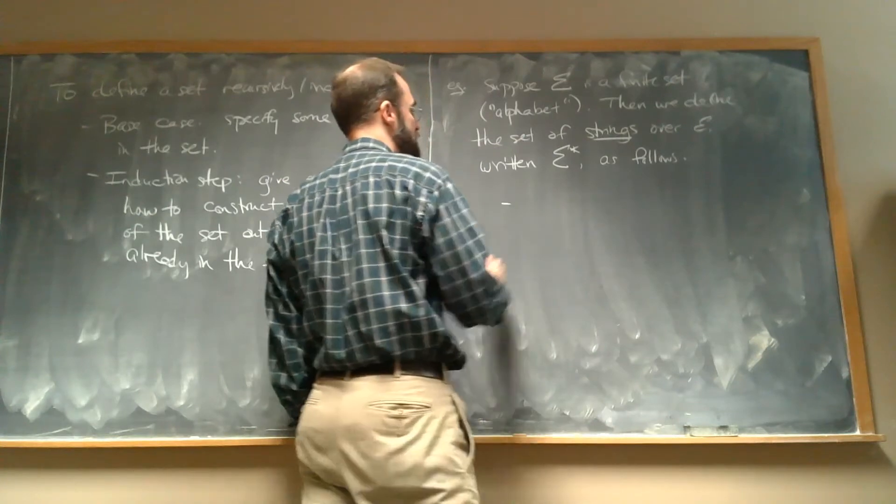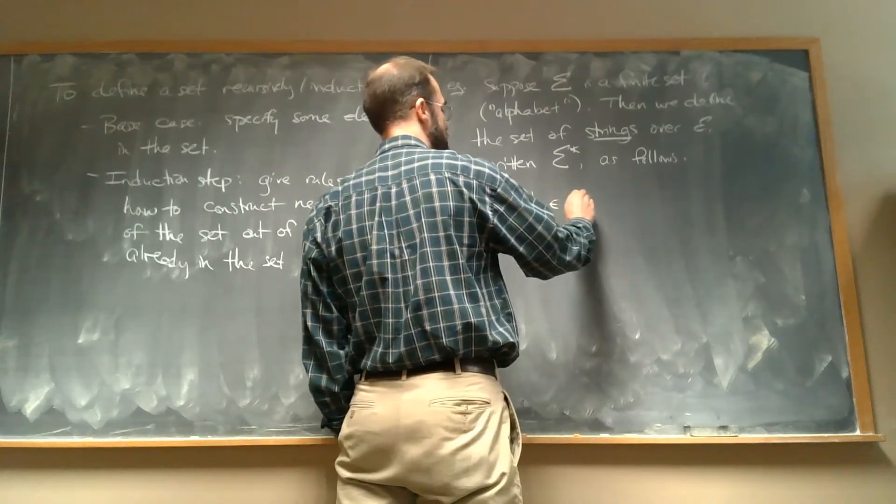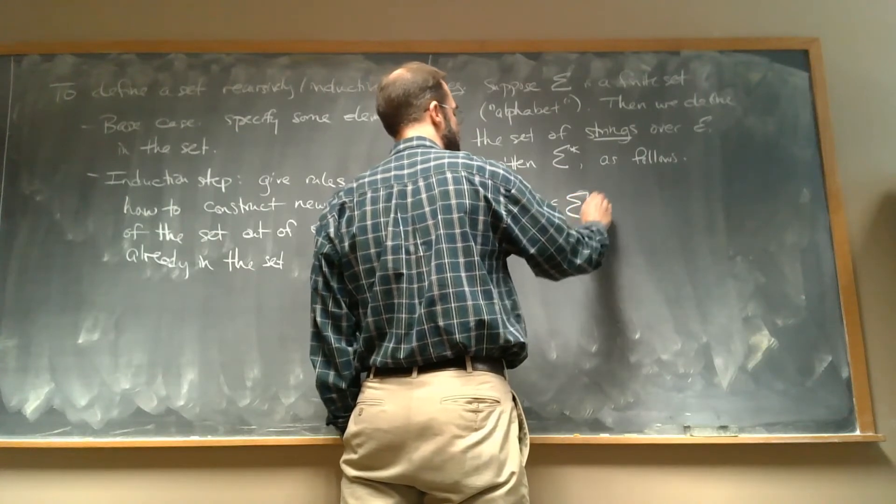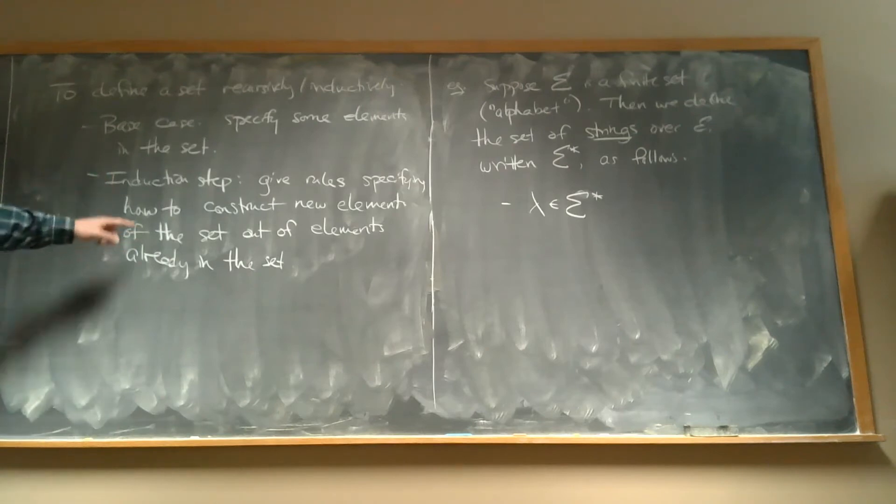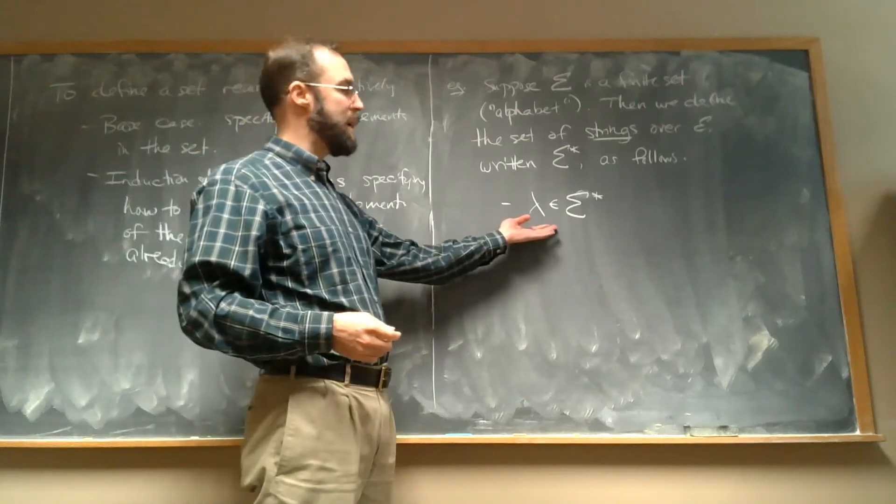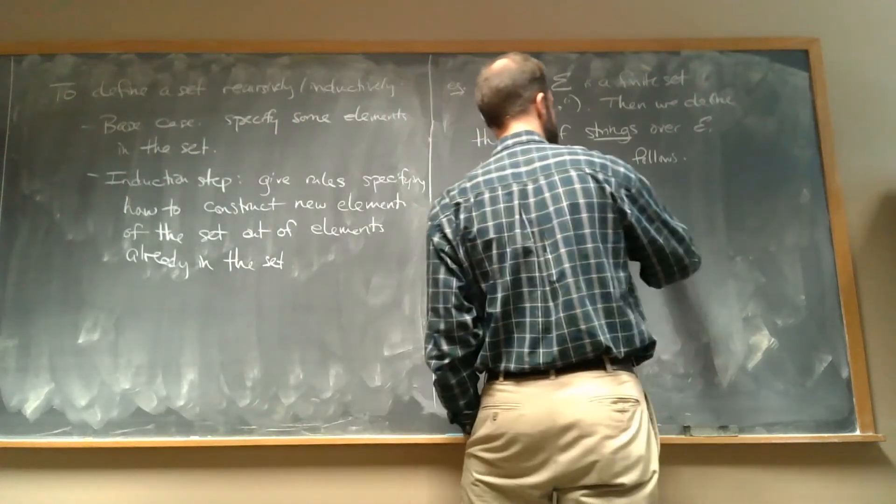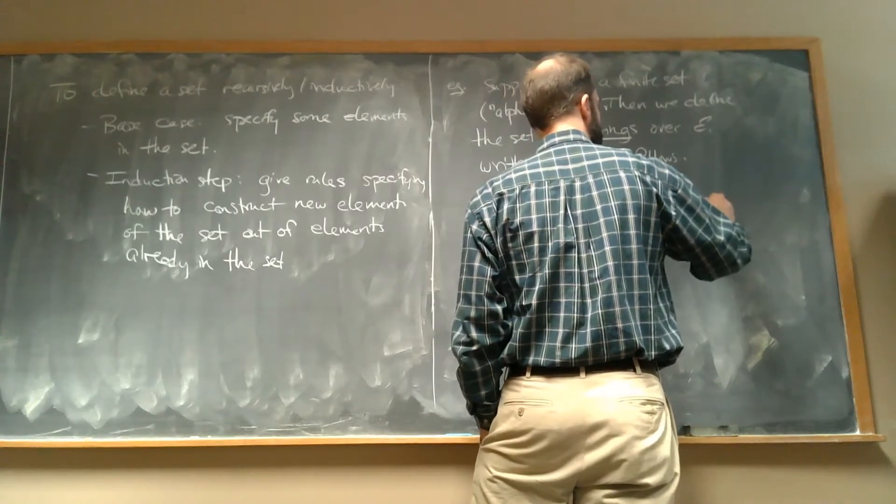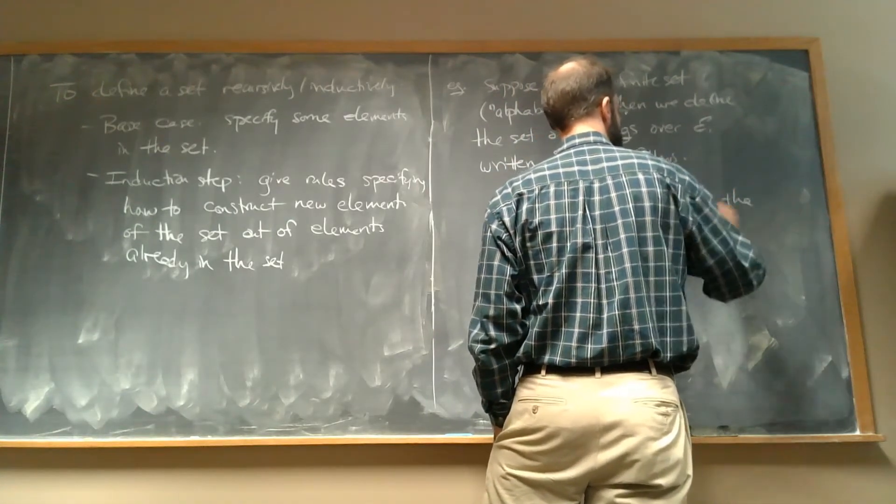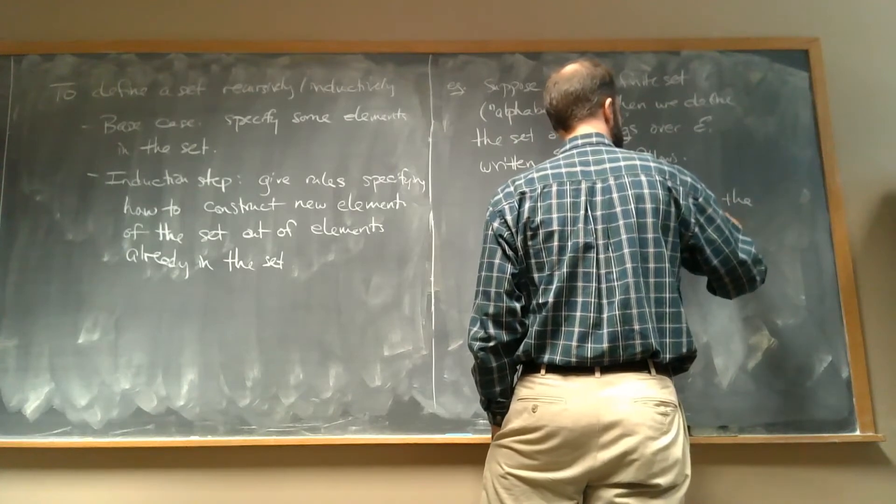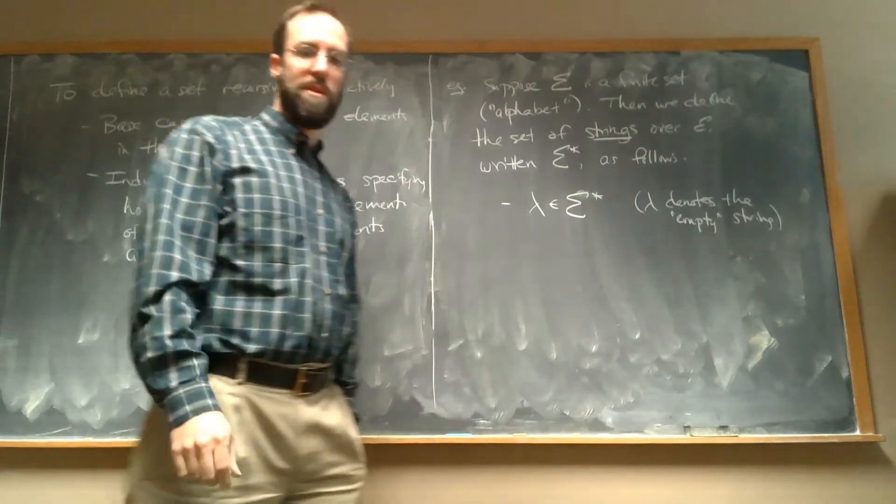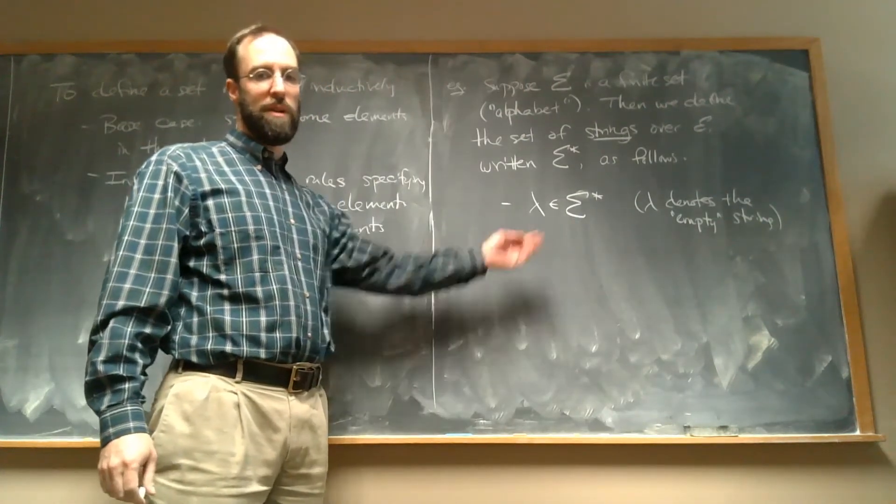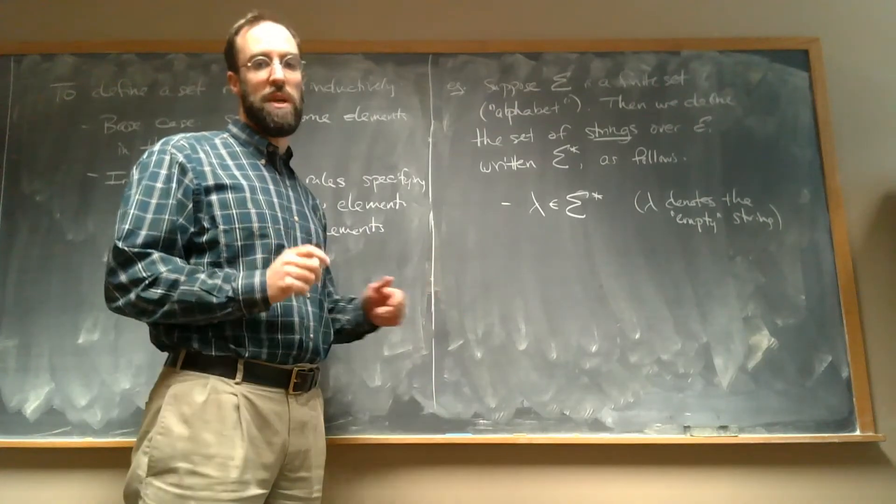And we'll write that set of strings as sigma star as follows. So, first at the base case, we're going to use this special symbol lambda. So I'm defining the set sigma star. This set, the first step is to specify some elements of the set. So here I'm saying I have this special thing called lambda. That's an element of the set. And lambda denotes the empty string.